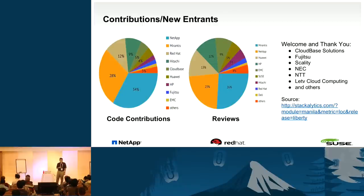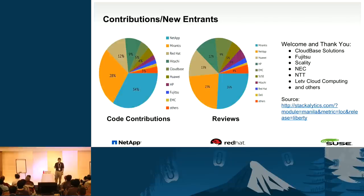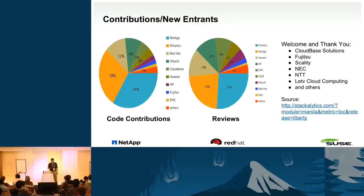Here are charts showing code contribution and reviews. NetApp, Red Hat, and SUSE are major contributors to the Manila program. NetApp has been a pioneer and leader since inception. For the Liberty release, new contributors include CloudBase, Fujitsu, Scality, NEC, NTT, and Latvia Cloud Computing.